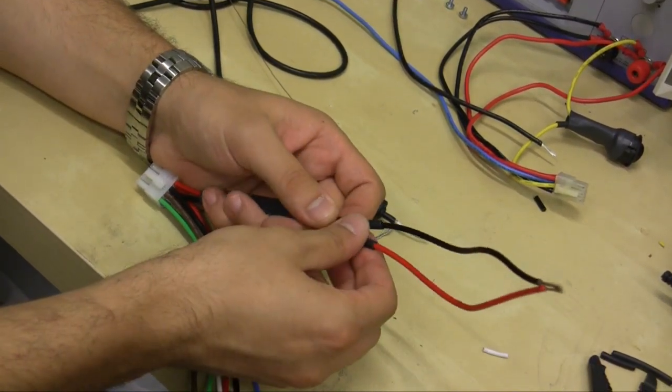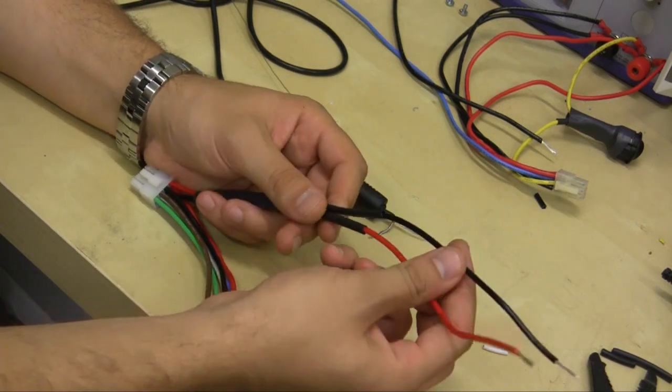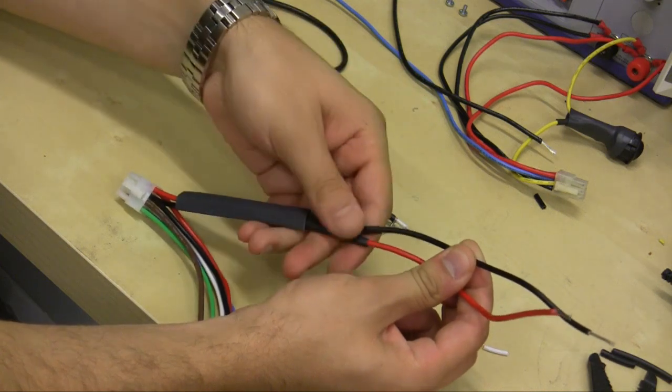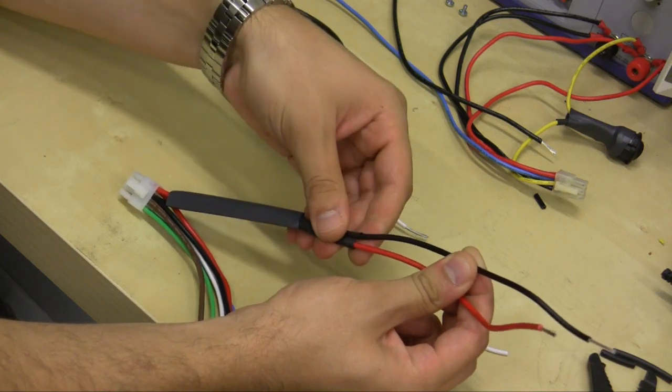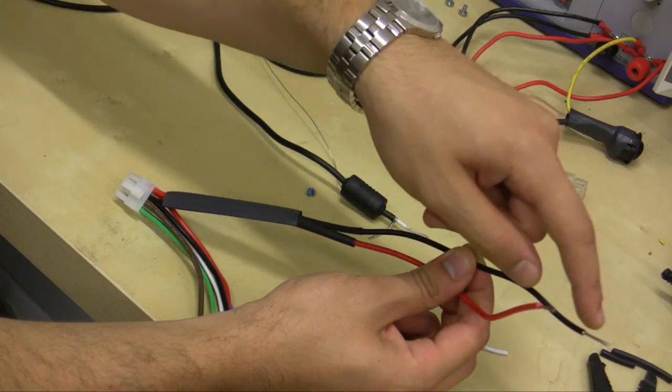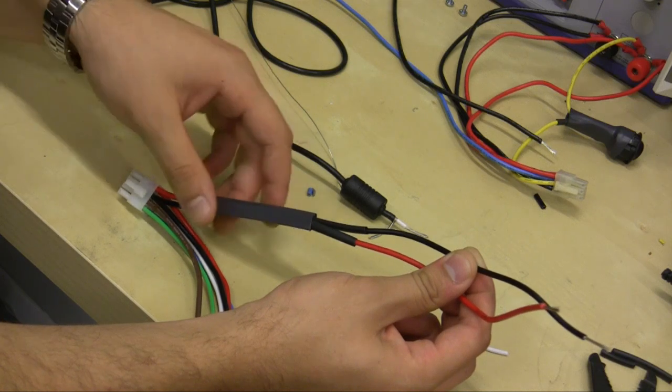And then what you do is, if you have shrink tubing, slip the shrink tubing onto the wires first and then slide it a little bit more than halfway down. Because once you apply heat on these wires during soldering, they're going to get hot and you don't want the shrink tubing to shrink beforehand.